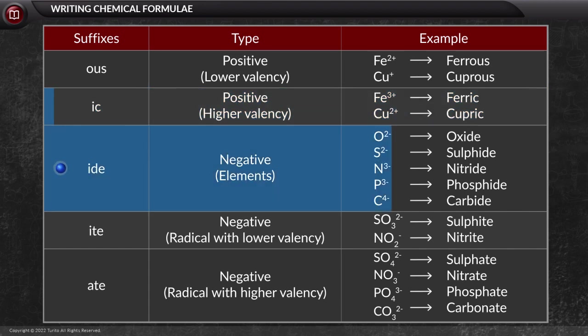Furthermore, for the negative charged elemental form, we say oxide for O2-, sulfide for S2-, nitride for N3-, phosphide for P3-, and carbide for C4-.